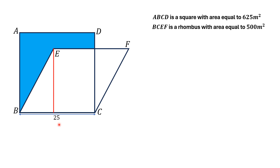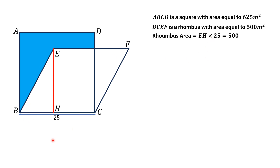Now, we draw a perpendicular from point E to the side BC, which meets BC at point H. Now we try to find the length EH. Since the area of the rhombus is equal to its perpendicular multiplied by base, so the perpendicular is EH and the base is 25, and that is equal to 500. So dividing both sides by 25, EH is equal to 20 meters. So we replace EH as 20 meters.